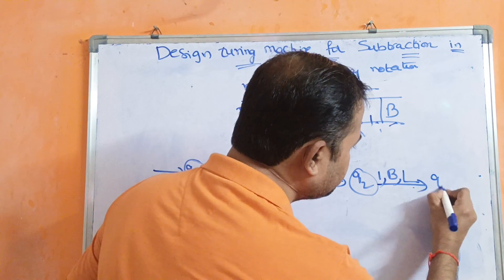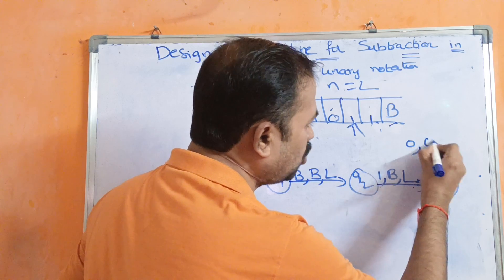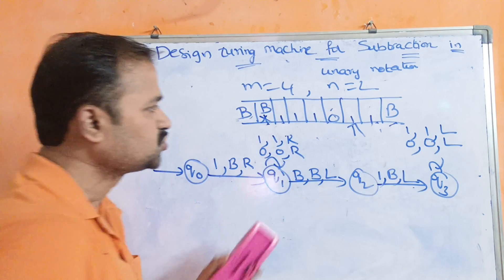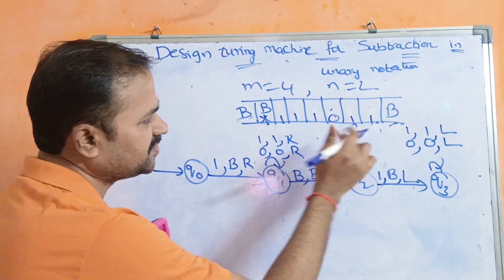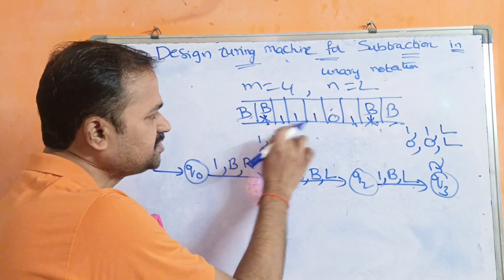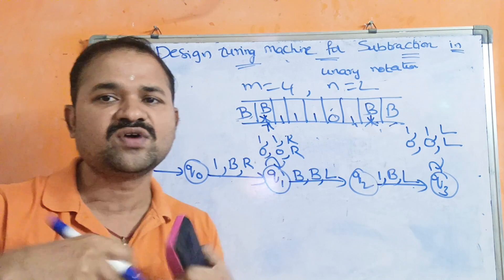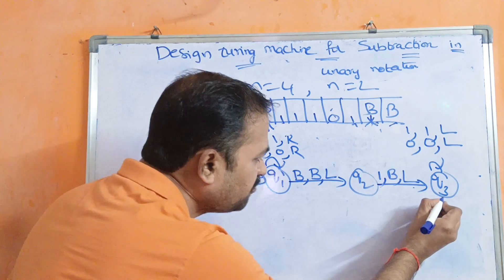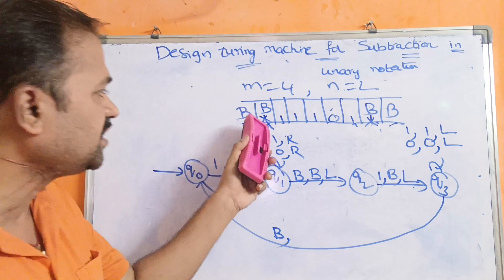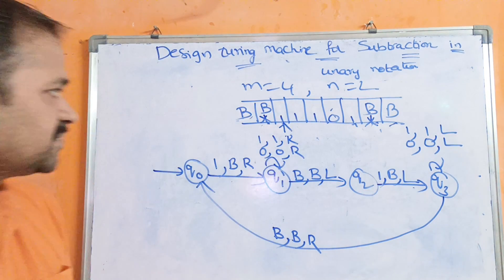On state q3, if we read zero, don't change it but move the head left; if we read one, don't change it but move the head left. We continue leftward until we reach the blank symbol. Reading a blank symbol on q3 signals that one iteration is complete, so we move the head to the right to return to the initial state q0.